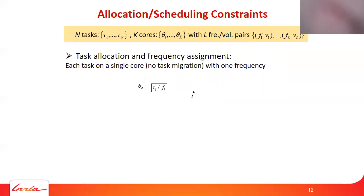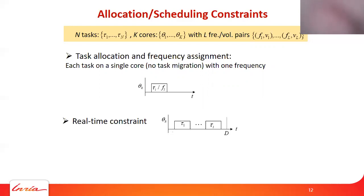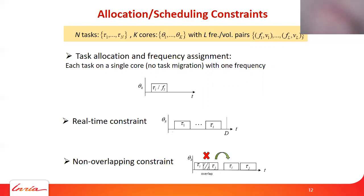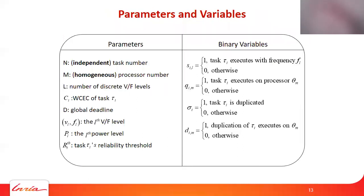For task allocation, we assume there is no task migration during execution, and each task is allocated on only one processor. Similarly for frequency assignment, each task is assigned a single frequency level. When scheduling tasks for real-time applications, tasks should be executed before the given global deadline. When more than one task is allocated on one processor, tasks' execution should not overlap each other. Therefore, non-overlapping constraints are applied on each processor.